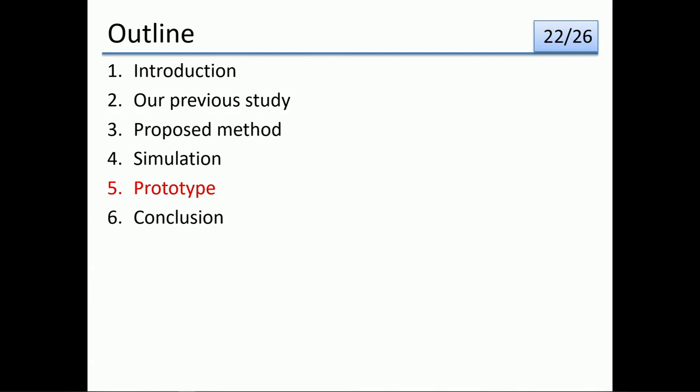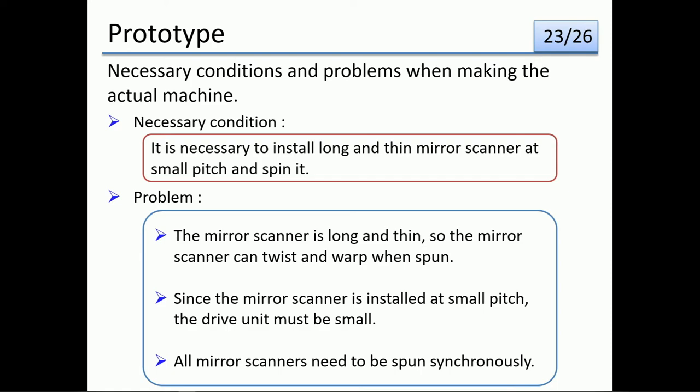Next, I will talk about the prototype. When making the actual machine, we considered the necessary conditions and problems. It is necessary to install long and thin mirror scanners at a small pitch and speed. There are some problems in the production of the actual machine. First, the mirror scanner is long and thin, so it can twist and warp when spun. Next, since the mirror scanners are installed at a small pitch, the driving unit must be small. Finally, all mirror scanners need to be spun synchronously.